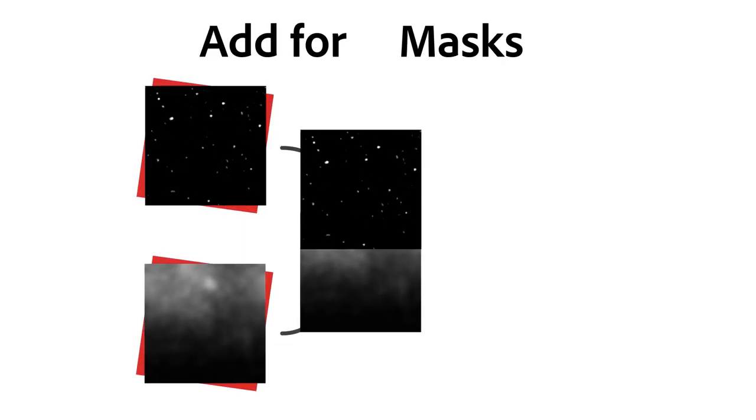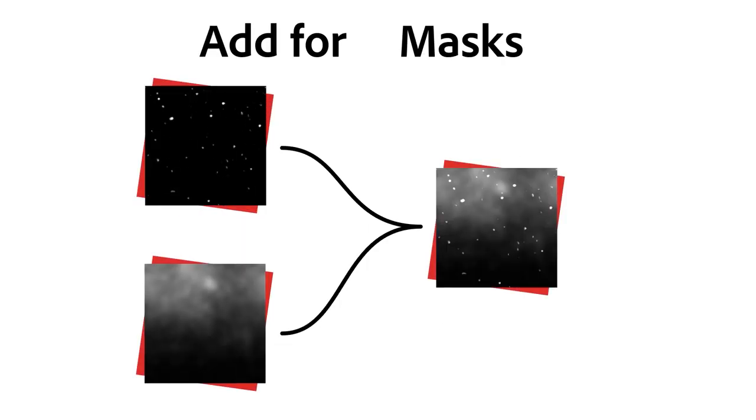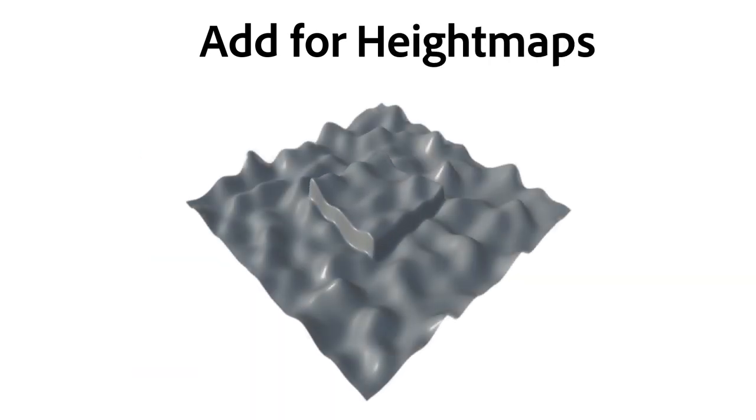Let's quickly recap what Add and Subtract are useful for. Add combines two masks, keeping the white from either of the two components. Add extrudes or moves outward in height maps, keeping detail of the bottom layer.